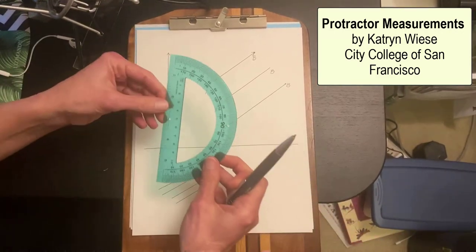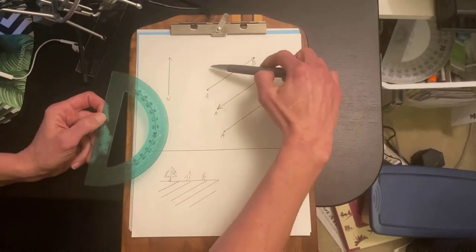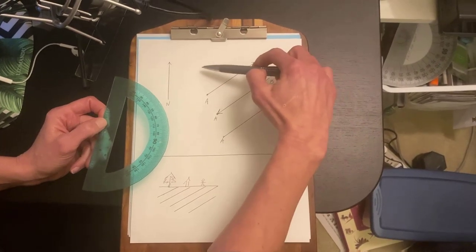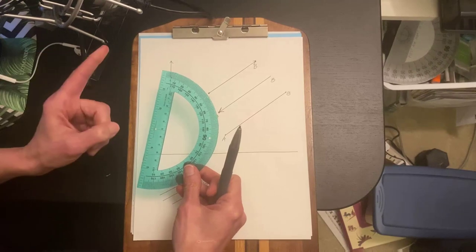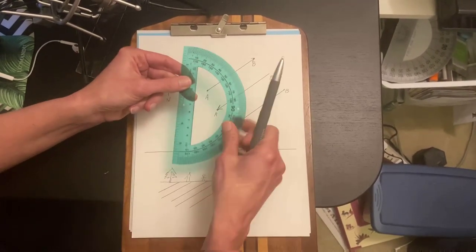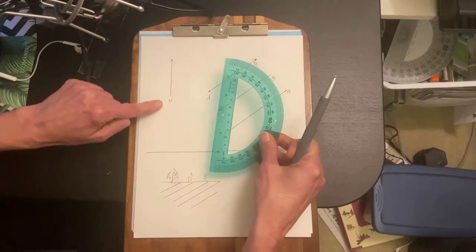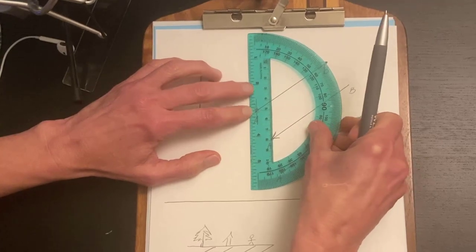Before I set my protractor down, ask what zero is. If I'm going to measure the orientation bearing heading of this from north, then zero is north. So I have to put the zero portion of my protractor facing in the same direction as north. And of course the center is going to go over point A.